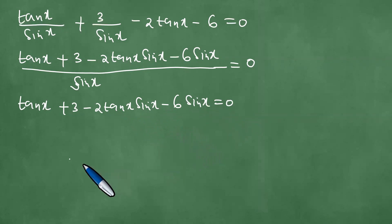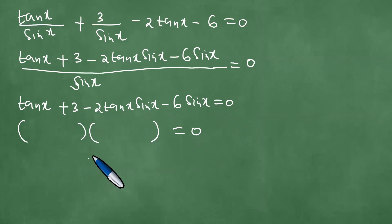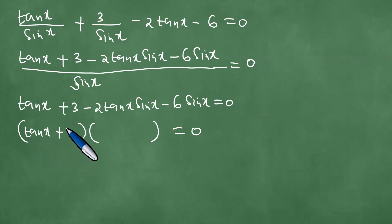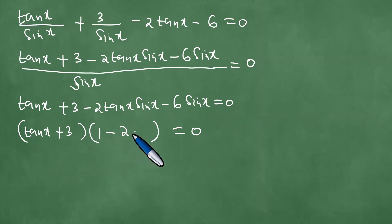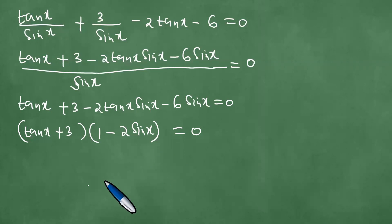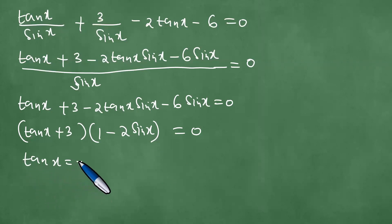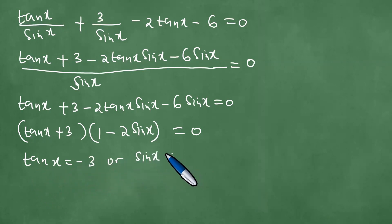From here, we factorize this trigonometric equation by writing down (tan(x) + 3)(1 - 2sin(x)) = 0. This means that tan(x) = -3 or sin(x) = 1/2, as shown there.